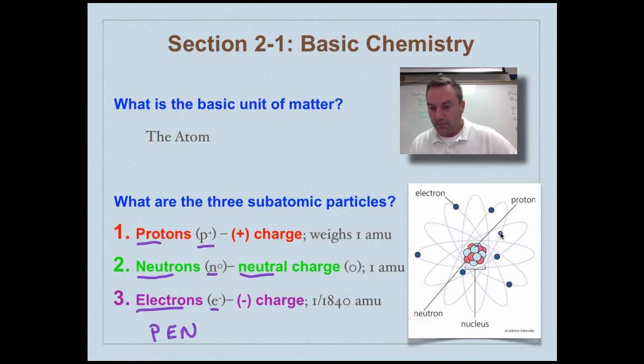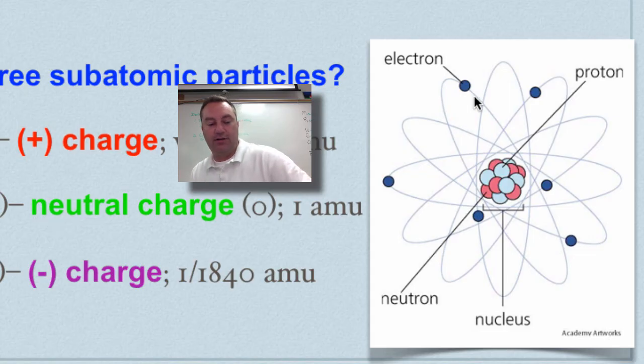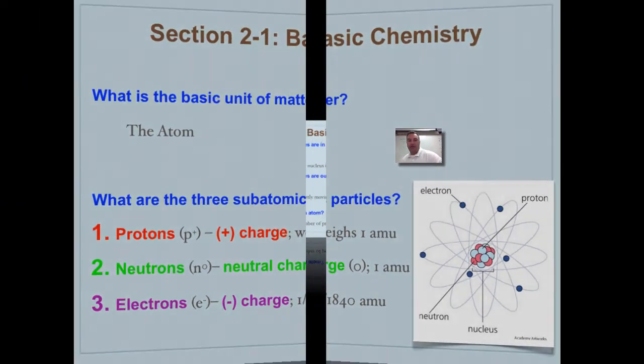If you look over here in this picture you can see that protons, which are these blue things right in here, and neutrons which are red - these guys are found in the nucleus. The electrons are found outside of the nucleus, and that is the topic of our next slide.